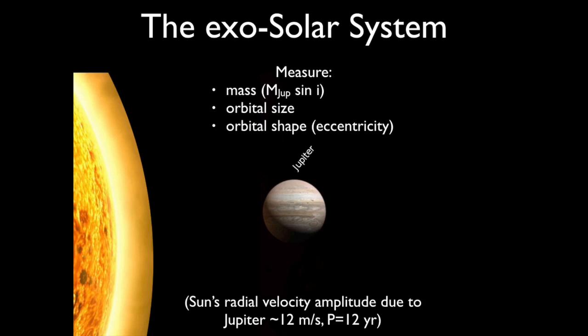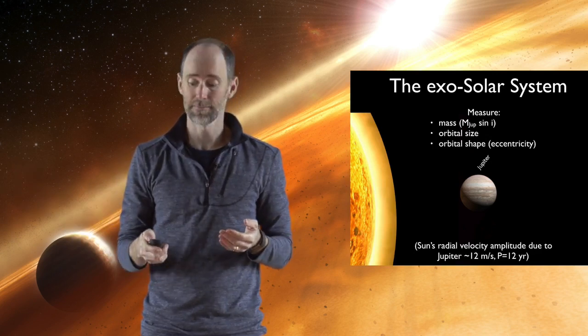Now the question is, if we took the solar system and put it around another star and observed it with present-day Earth technology, what would we see? It turns out the only planet we could detect is Jupiter. With a long-term radial velocity monitoring program, we could measure its mass, orbital size, and orbital shape. But that's it. We couldn't detect any of the terrestrial planets, at least for now, or the more distant giant planets.